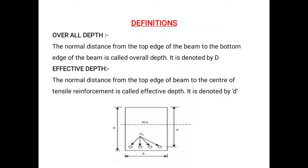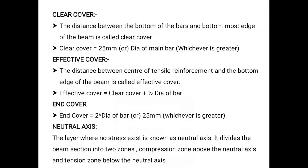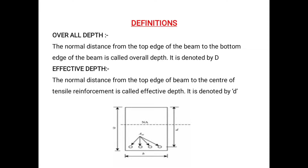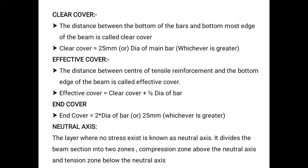Now for beam definitions. Overall depth is the full depth of the beam from the top end to the bottom end. Effective depth is from the top end to the center of the bottom reinforcement. Clear cover is from the bottom of the reinforcement to the bottom of the beam.